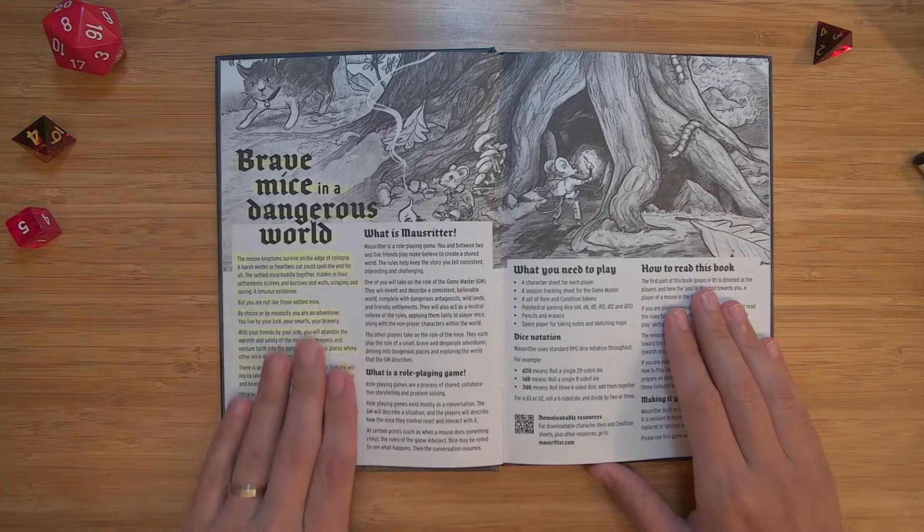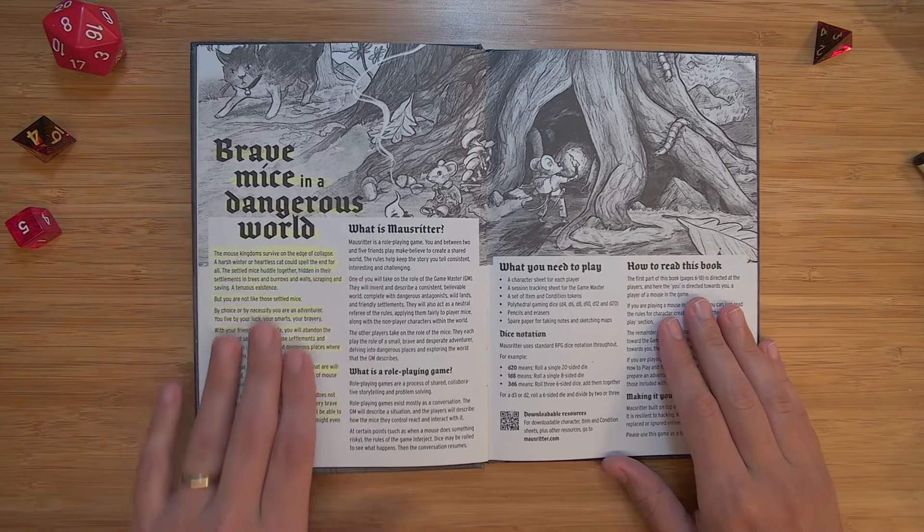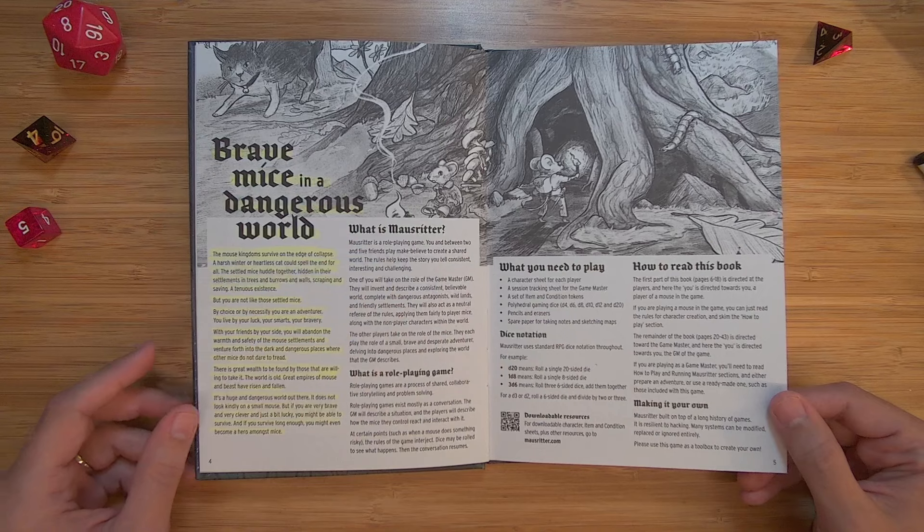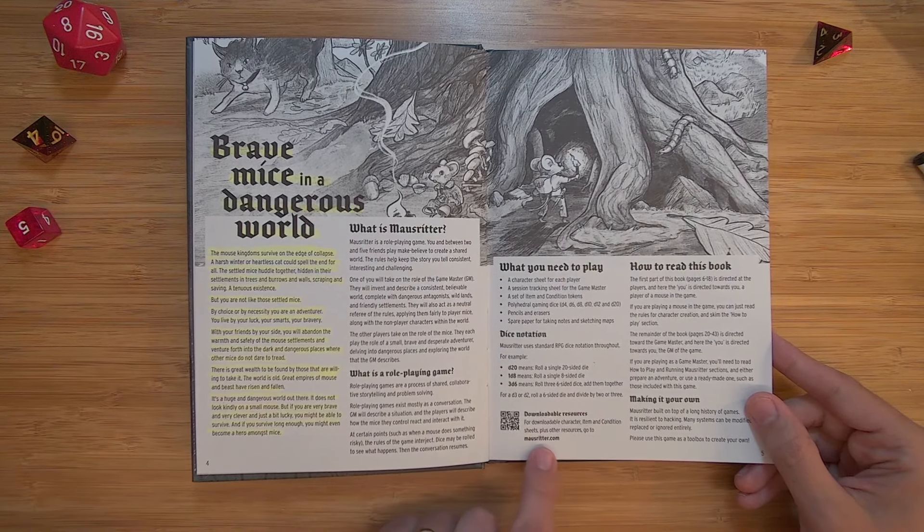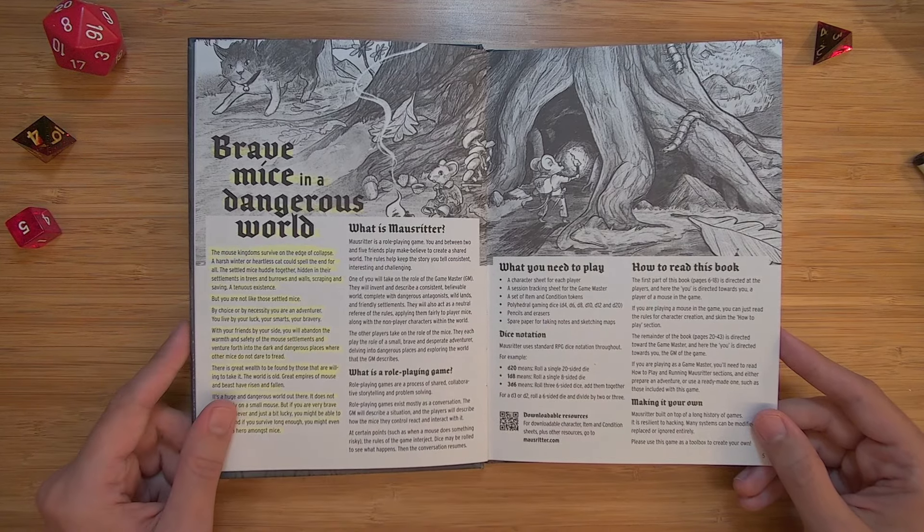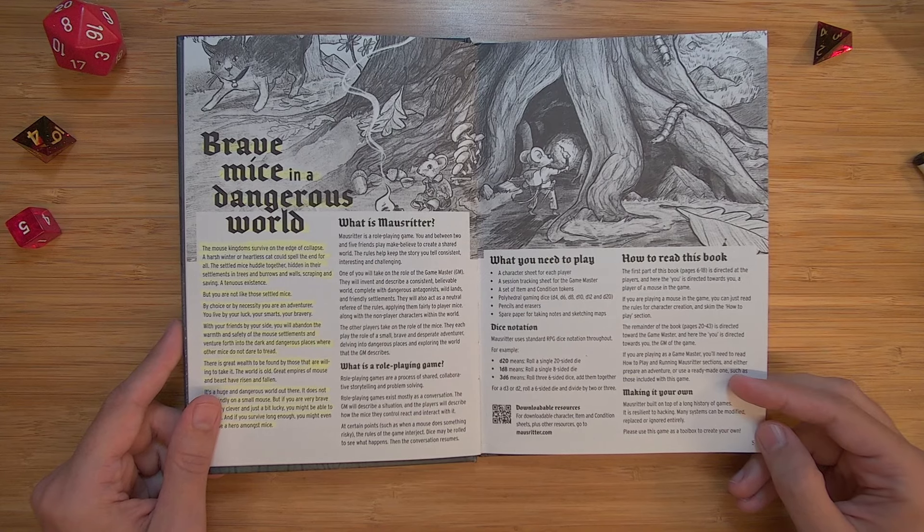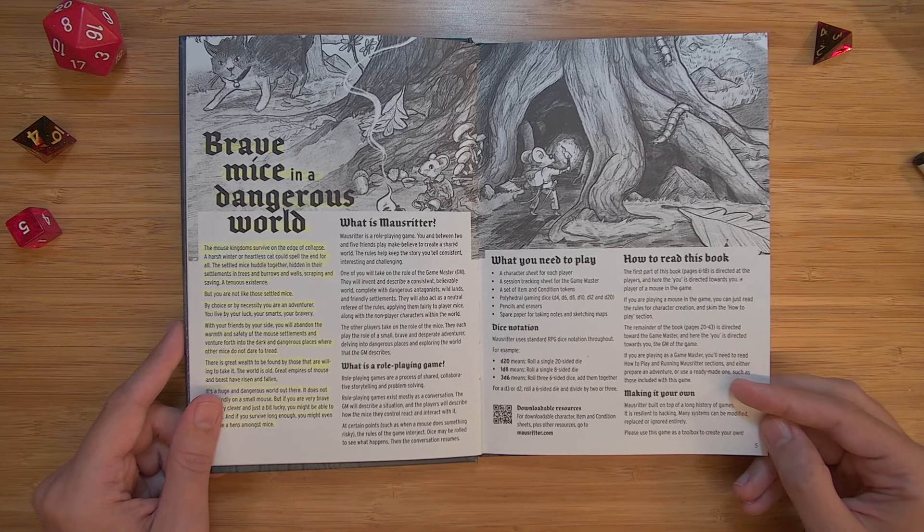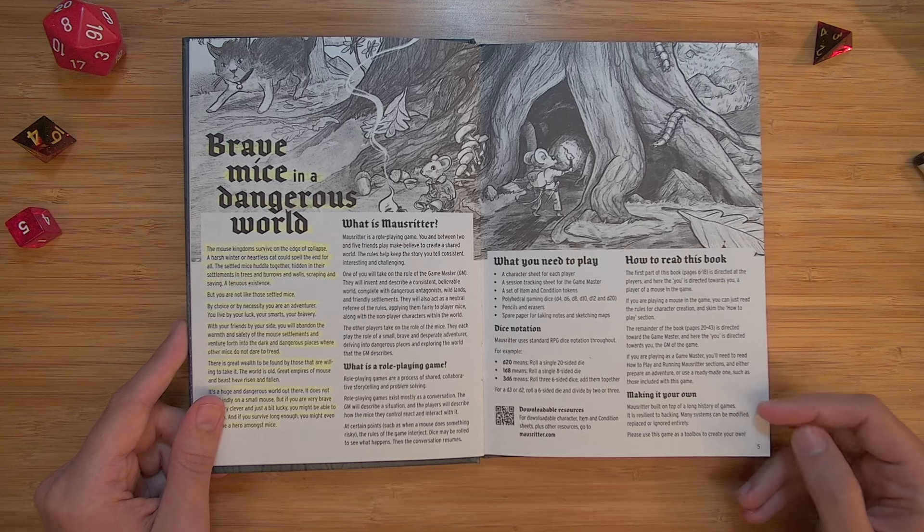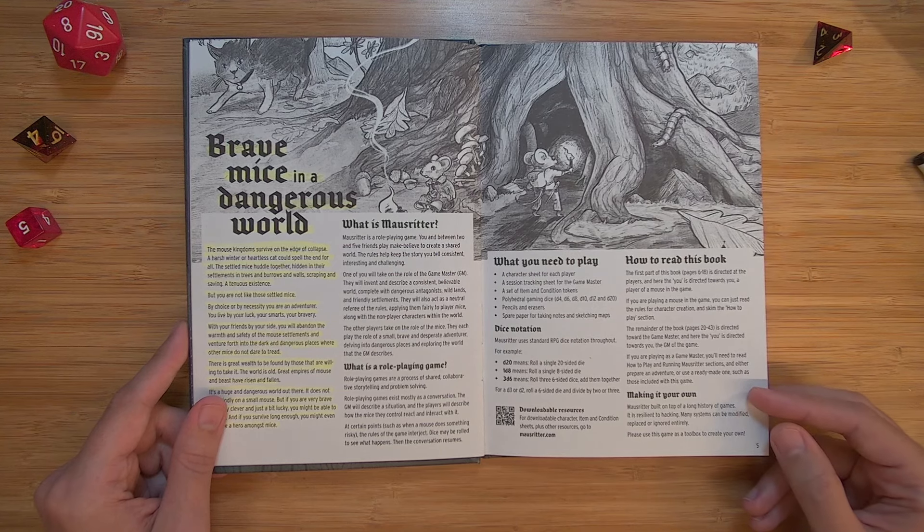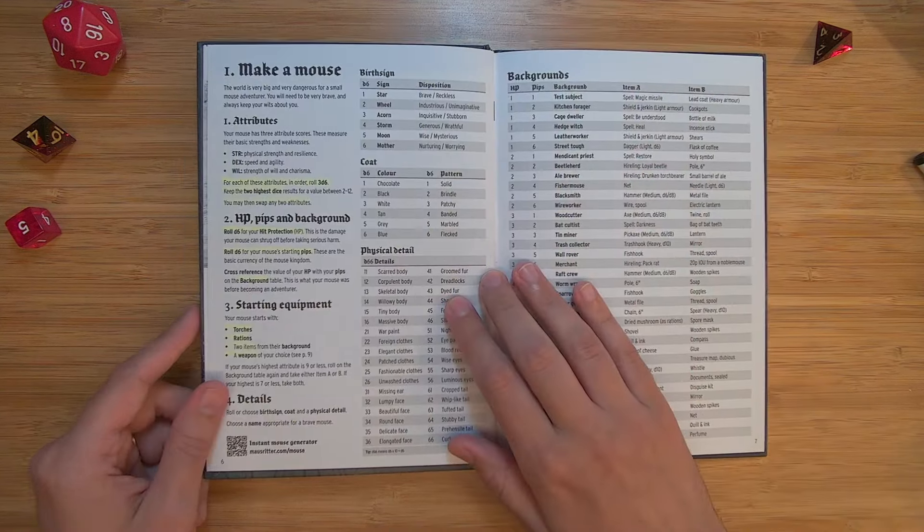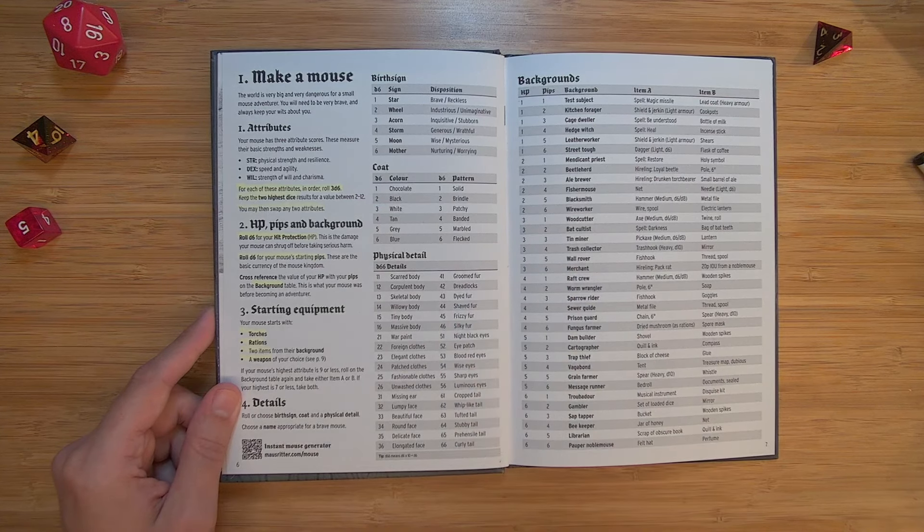So I believe that as I was introducing my friends to this game, this is what I read first. And they immediately got the flavor of what we're going on. What is Mouse Ritter? What is a role-playing game? I love how there are sort of these QR codes and links to different spots on the website where you can easily build a character, your hero mouse. And he says down here, Mouse Ritter is built on top of a long history of games. It is resilient to hacking and many systems can be modified, replaced, or ignored entirely. Please use this game as a toolbox to create your own. I love that spirit of TTRPGs.